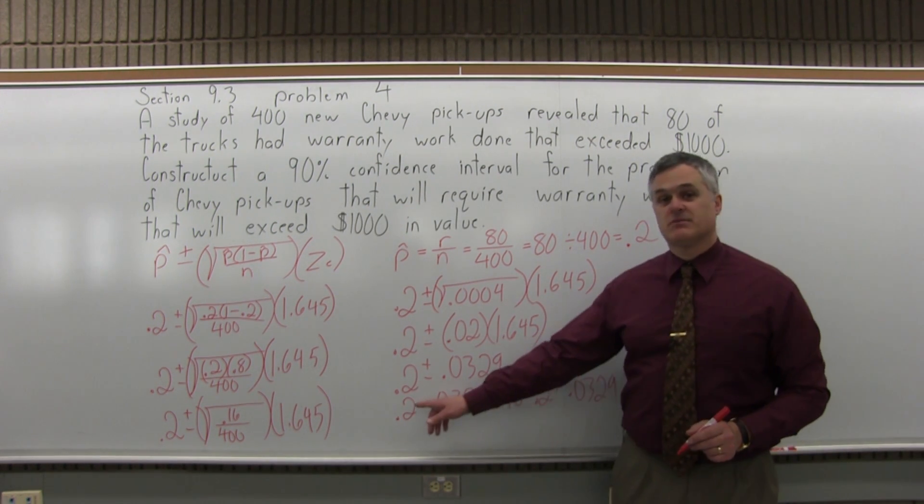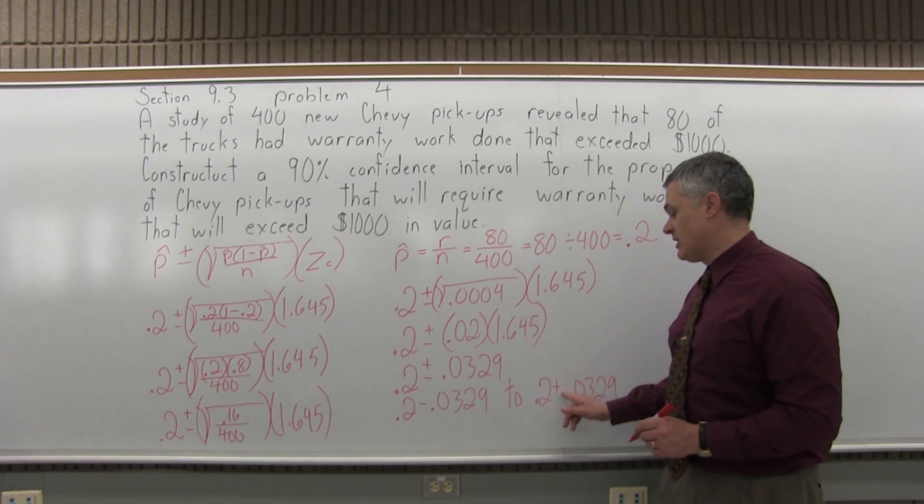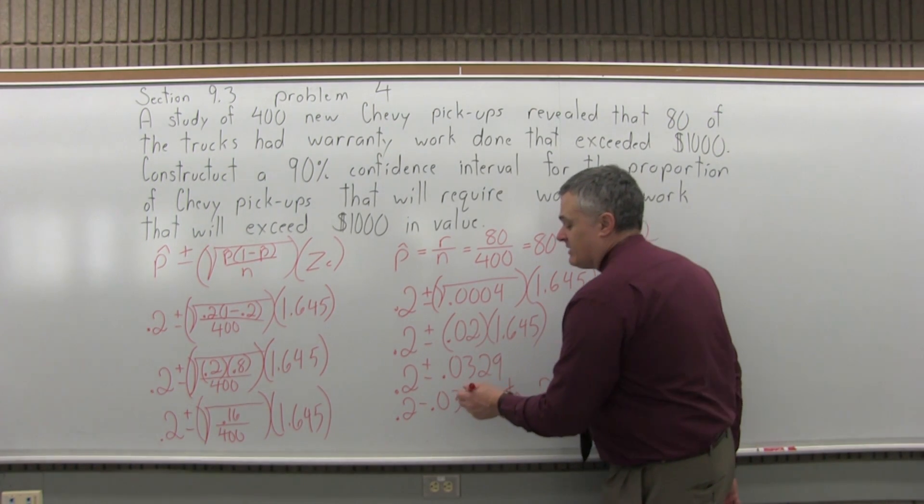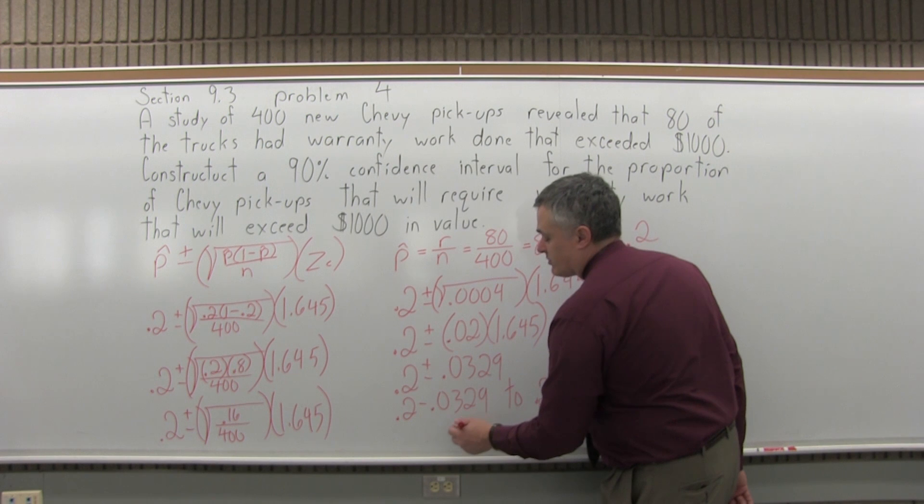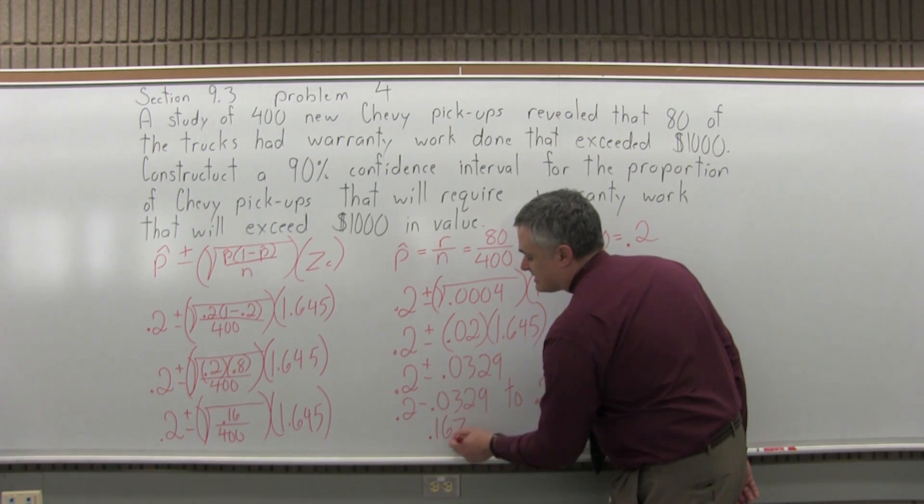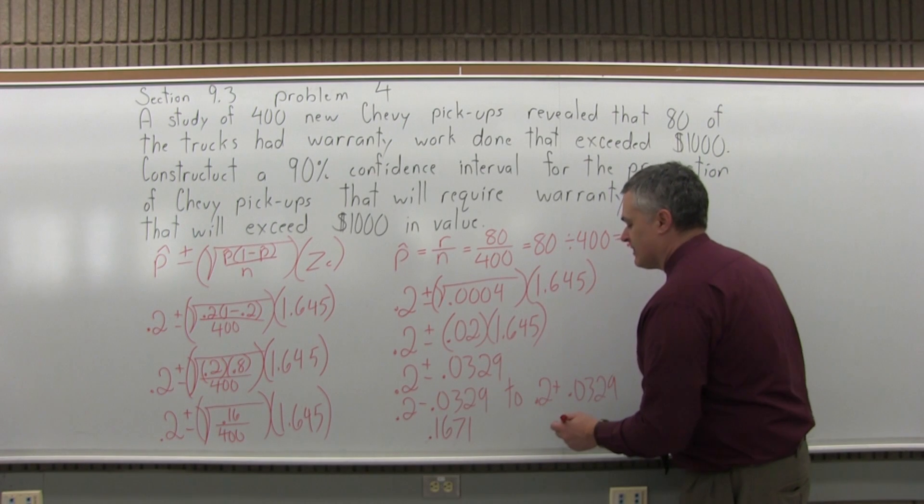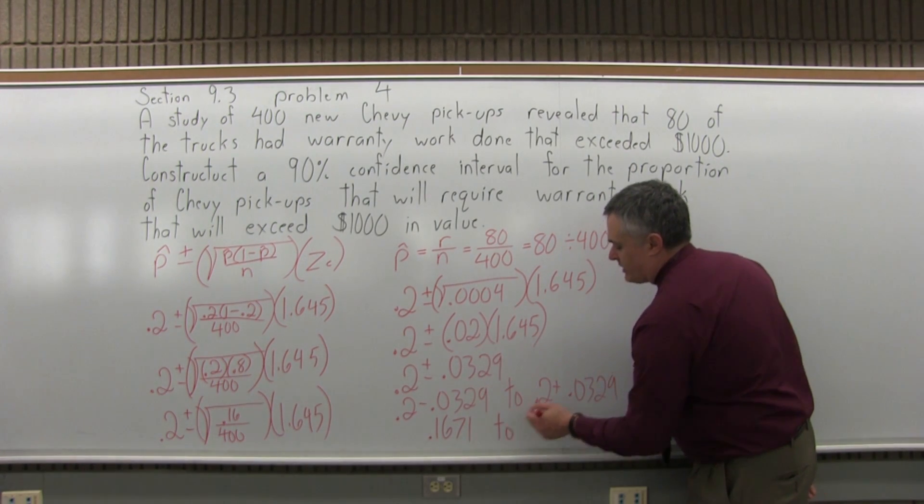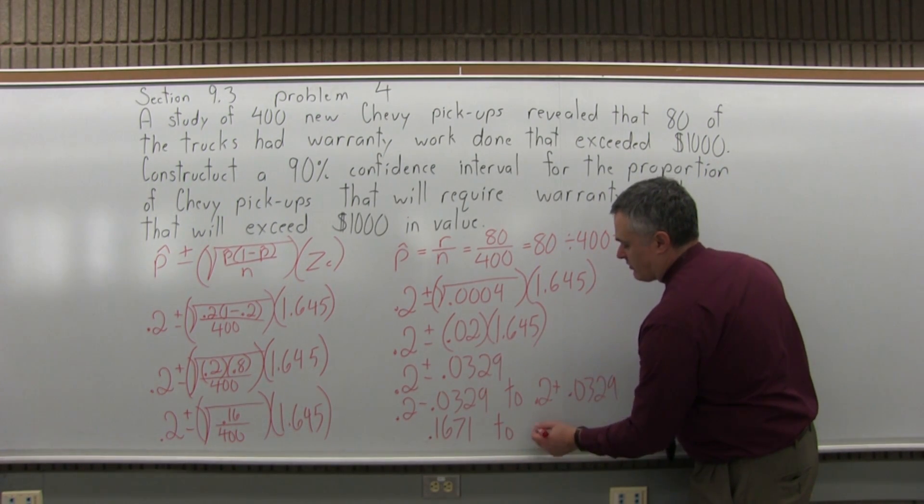The same numbers. One has a minus between the numbers and the other has a plus. So the low end of my interval, 0.2 minus 0.0329, will be 0.1671. And the upper end of the interval, 0.2 plus 0.0329, will be 0.2329.